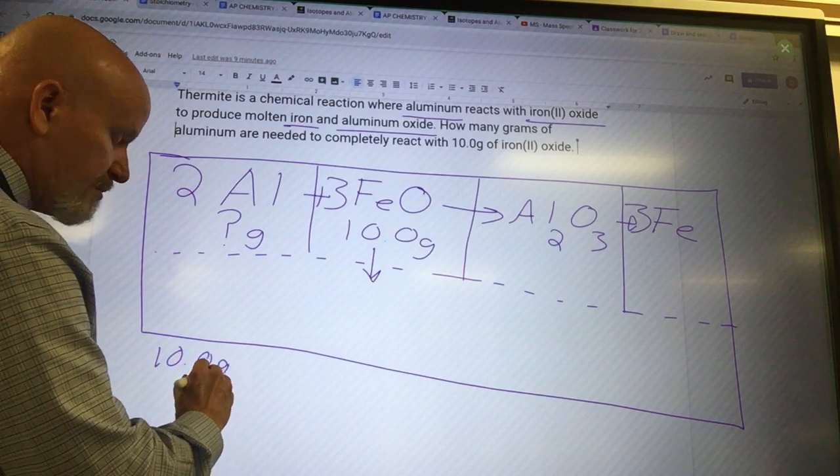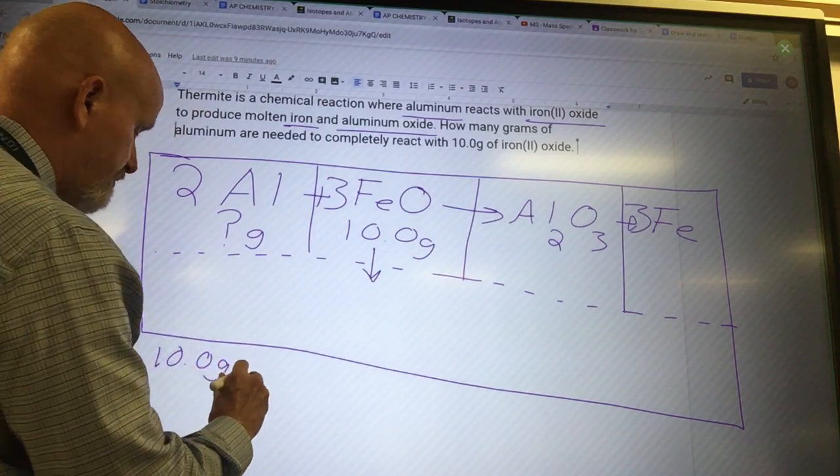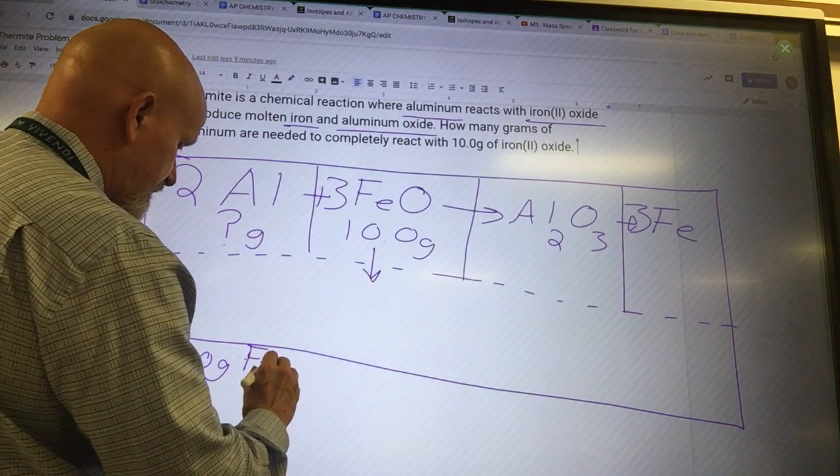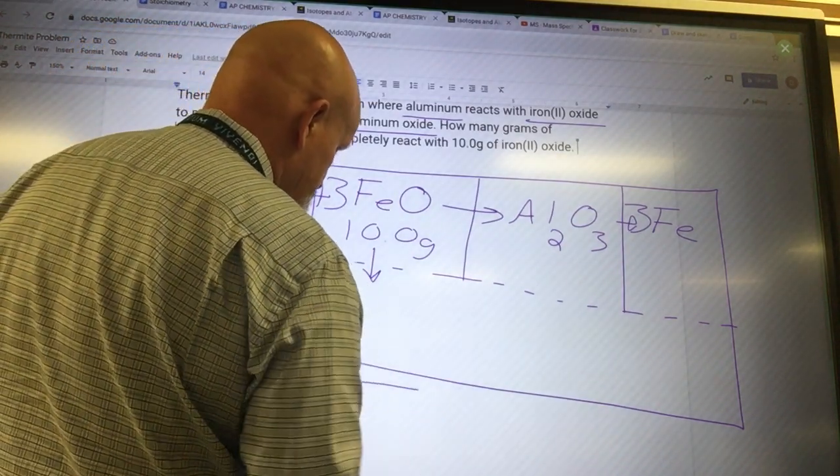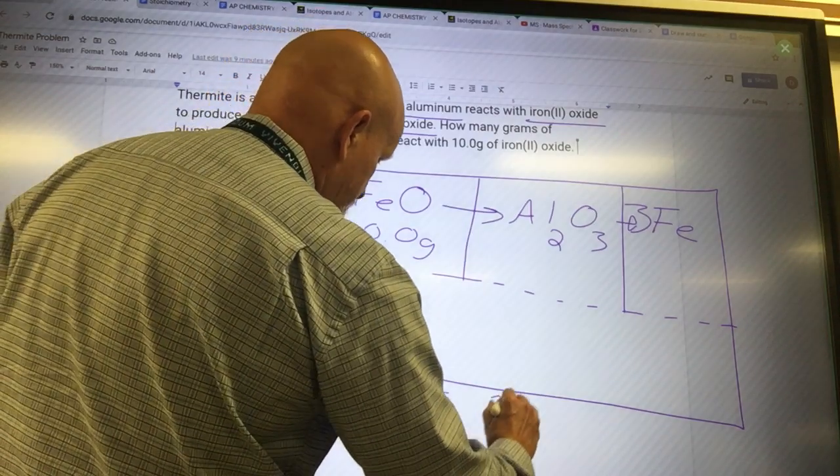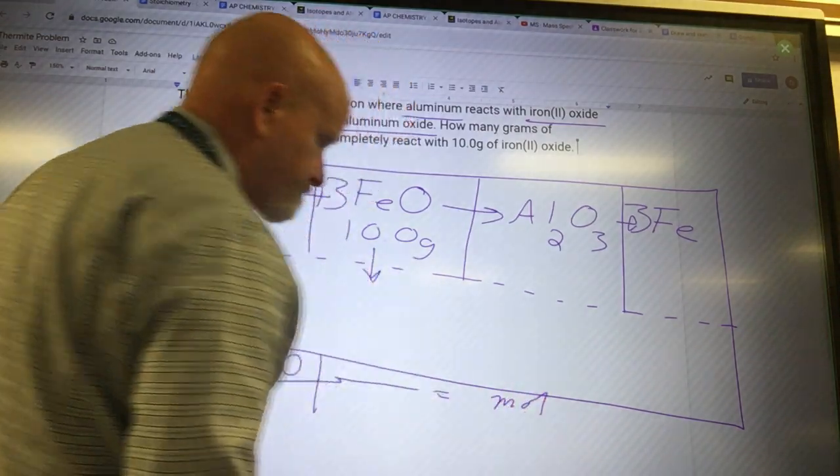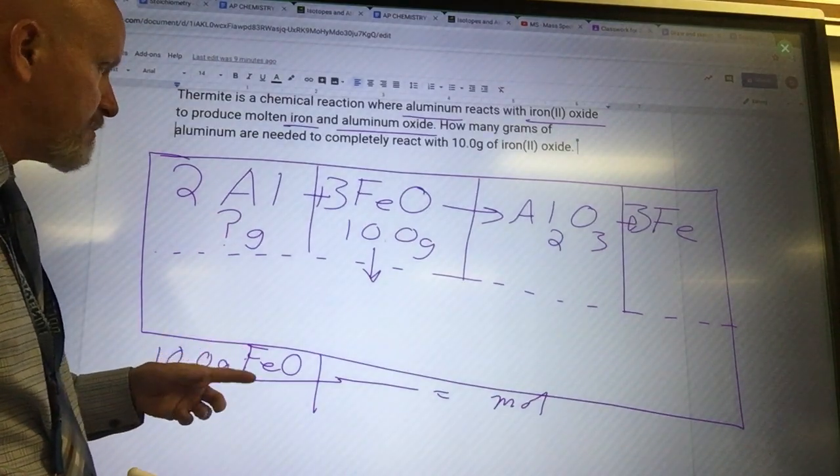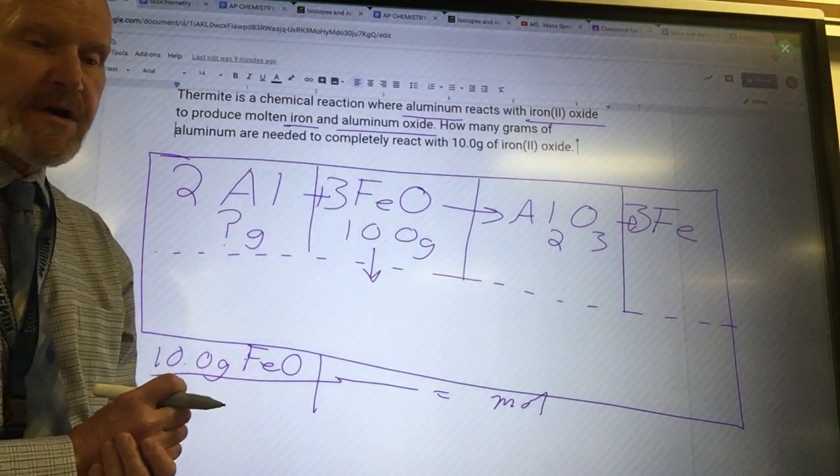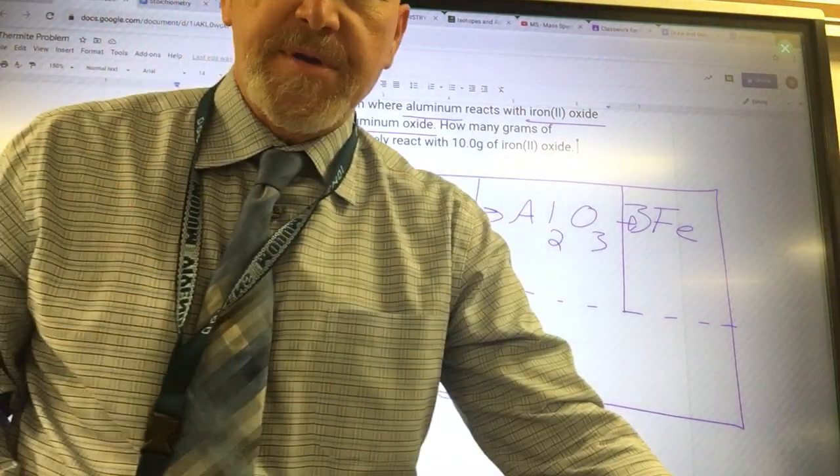10.0 grams of iron oxide is going to be equal to how many moles of iron oxide. Well, I need to know the molar mass of iron oxide. So I use my handy dandy periodic table. I'm going to figure out what this is. Stoichiometry problems take a while, so just going to have to live with that, guys.